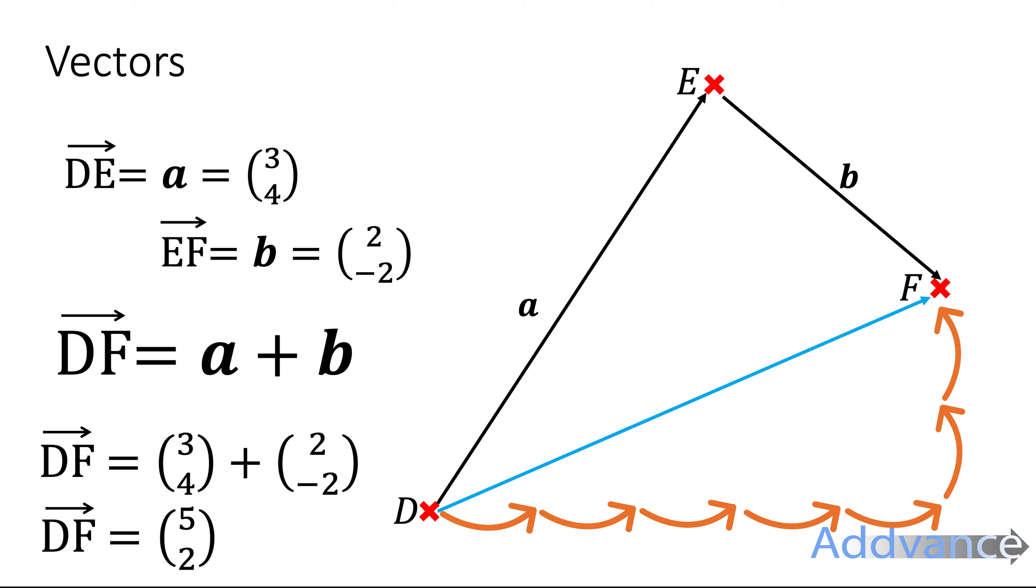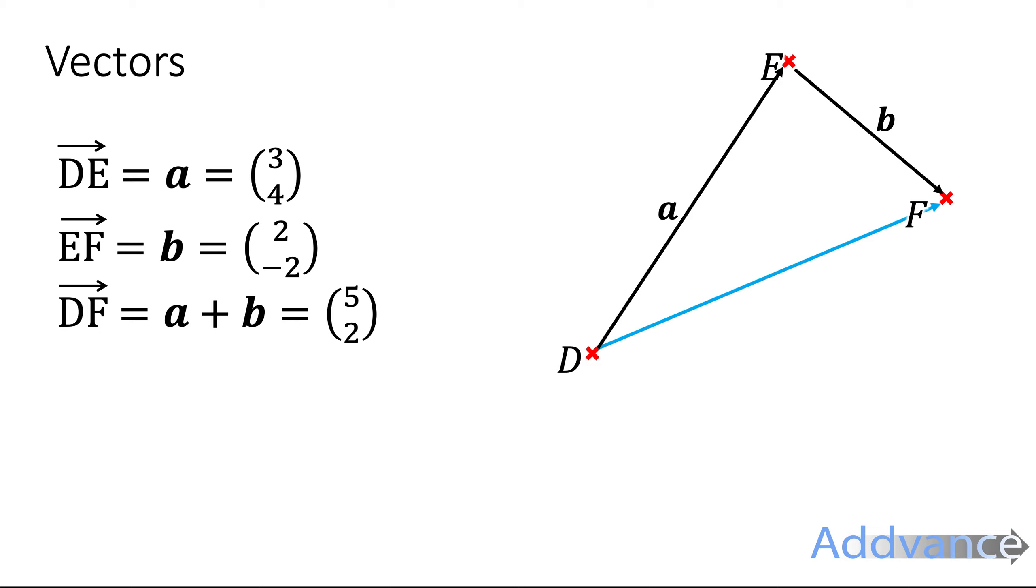Okay that's the basics of vectors. Now what we can also think about is going backwards on vectors. So if instead of going from D to E we want to go from E to D we go backwards and to make sure we go backwards we make it negative. So instead of doing a we do minus a, instead of doing (3,4) we do (-3,-4).